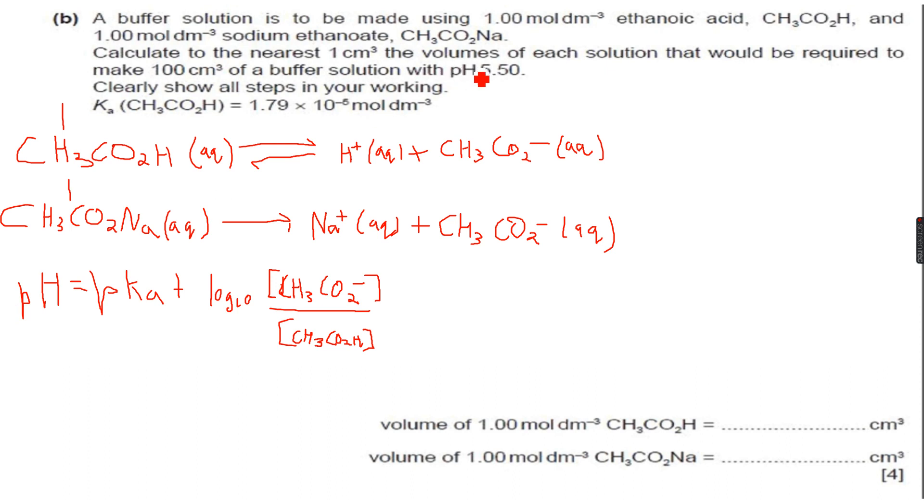So we can calculate pH. We are given the pH, we are given the Ka, so we can calculate pKa. So let's just make log₁₀ of [CH₃CO₂⁻] over [CH₃CO₂H] the subject.